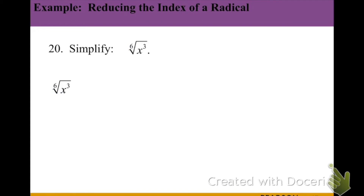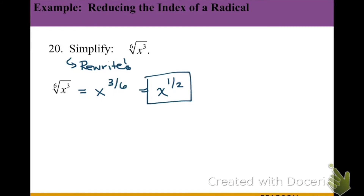We can also go backwards when we want to simplify — another way of saying simplify is just to rewrite. In this case, the power is 3 and the root is 6, so we can rewrite this as a rational exponent: x to the 3/6 power. Since we can reduce that fraction, we get x to the 1/2 power. We could also rewrite this as the square root of x if we want to express it in radical form.